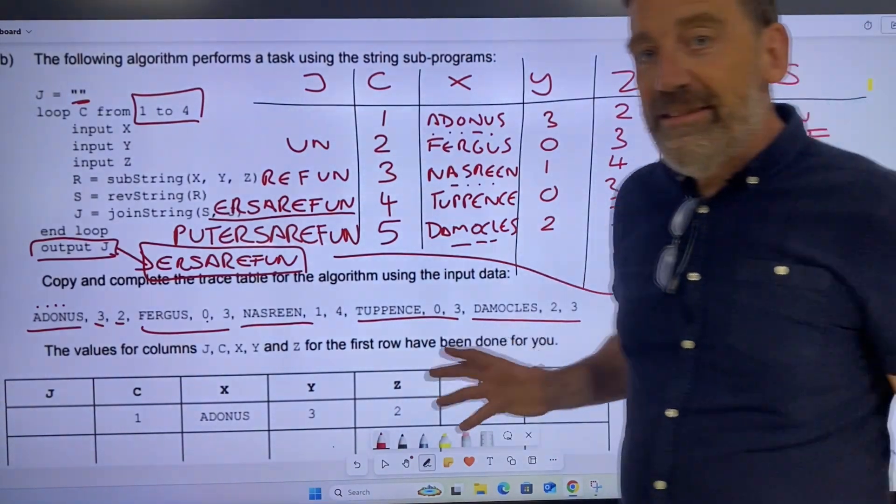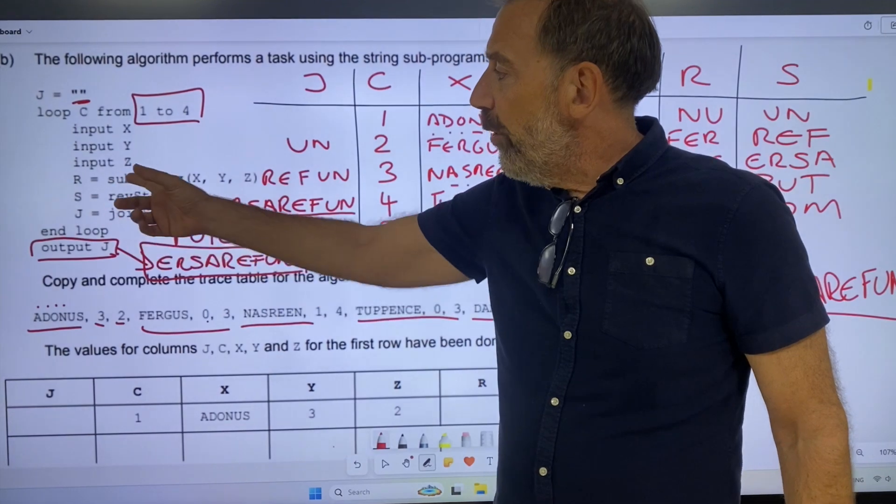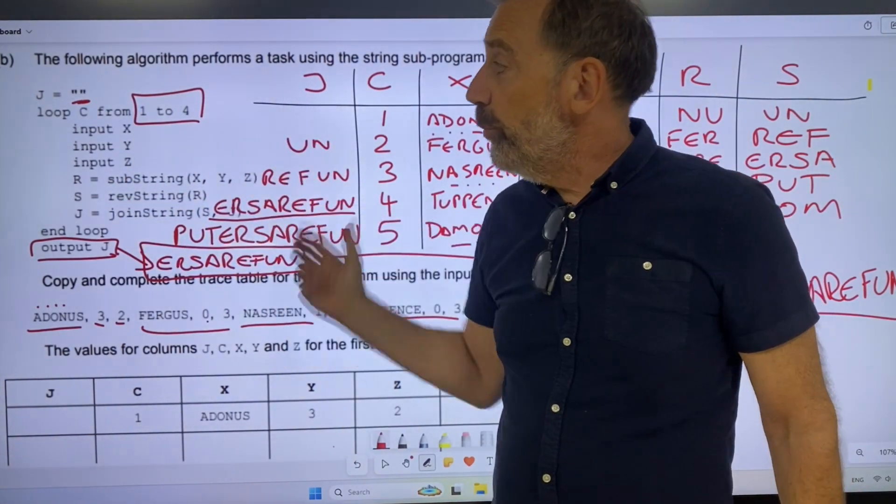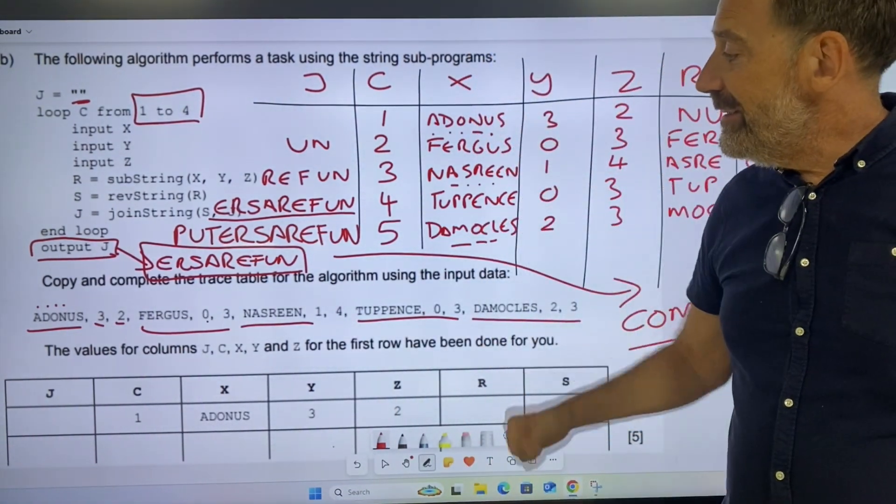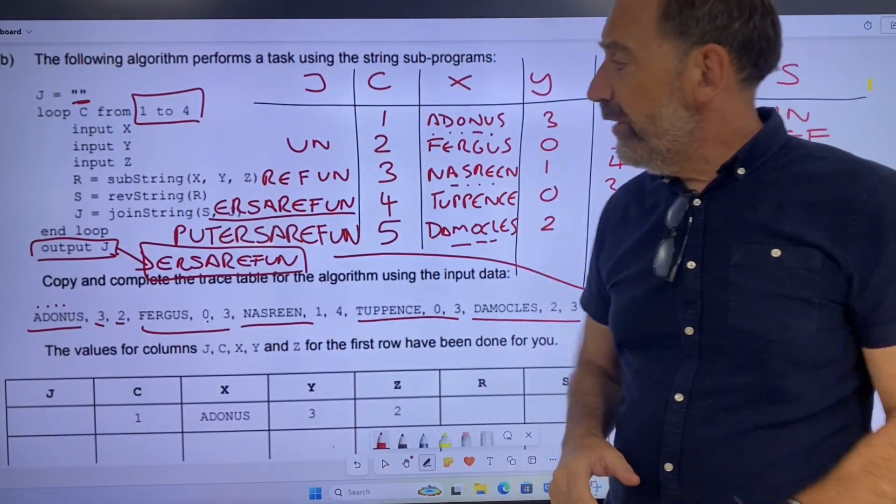I hope that made sense. I hope that sort of explains a little bit more about what substrings, reverse strings, and joint strings are, and how we can loop around a little program like that. Nice and easy. Five marks. Five marks for each of those questions.